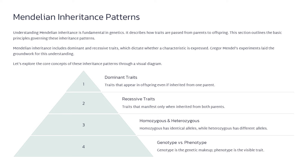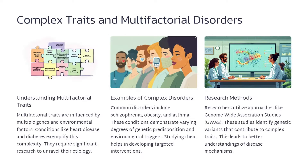Mendelian inheritance is the fundamental basis for understanding how traits are passed from parents to offspring. It describes dominant and recessive traits, as well as homozygous and heterozygous genotypes. Dominant traits appear in offspring even if inherited from just one parent, while recessive traits only manifest when inherited from both parents. Homozygous individuals have identical alleles, while heterozygous individuals have different alleles. Multifactorial traits are influenced by multiple genes and environmental factors, as exemplified by heart disease and diabetes.